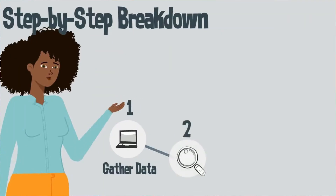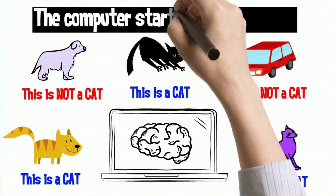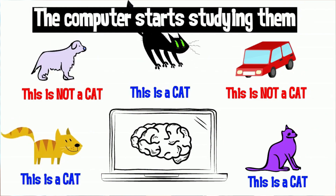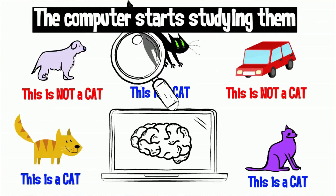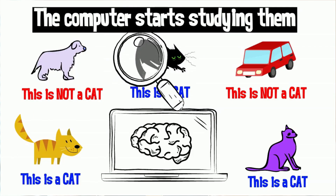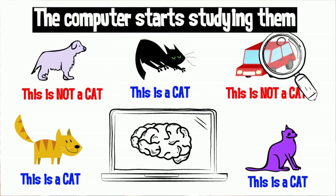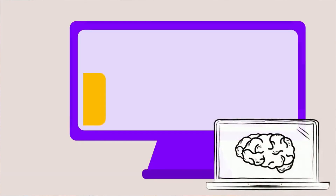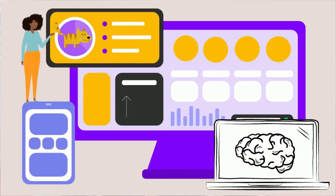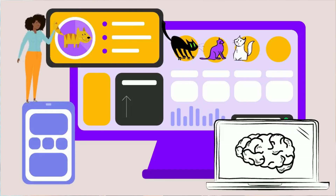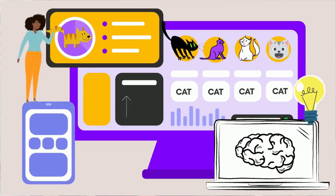Step number two: as we teach the computer, now that we've got all these pictures labeled, the computer starts studying them like a detective solving a mystery. It looks for clues. Maybe it notices that cats have whiskers, pointy ears, fluffy tails. And it also learns what things that don't have these traits look like — like a car with wheels. The more pictures we show it, the better it gets. Just like when you were a kid, if you saw cats everywhere, you'd get a really good understanding of what is a cat and what is not.